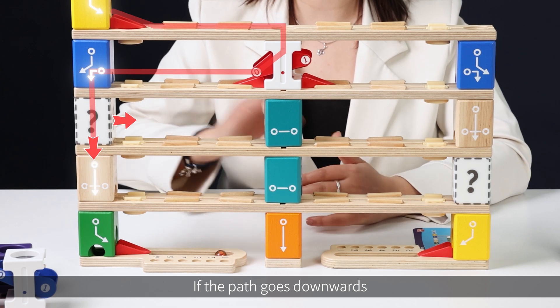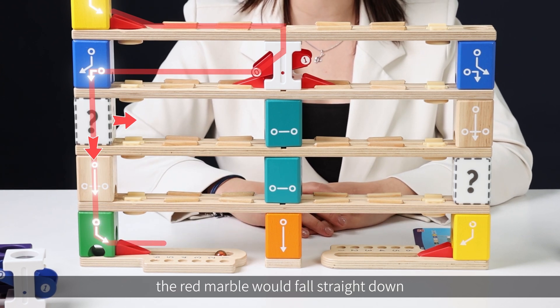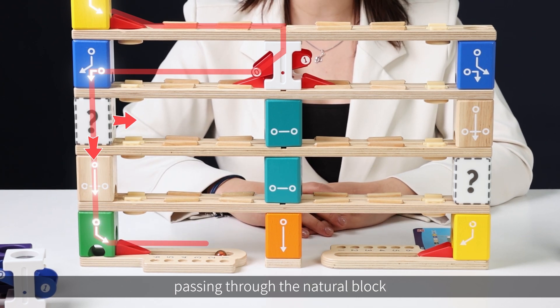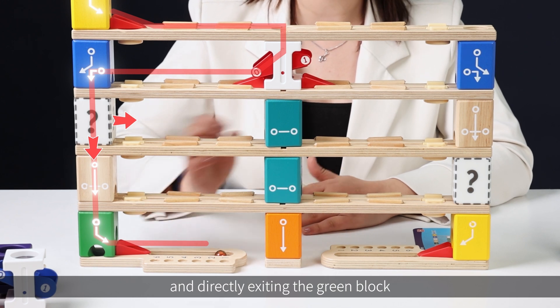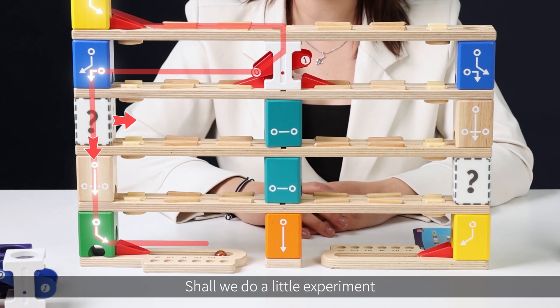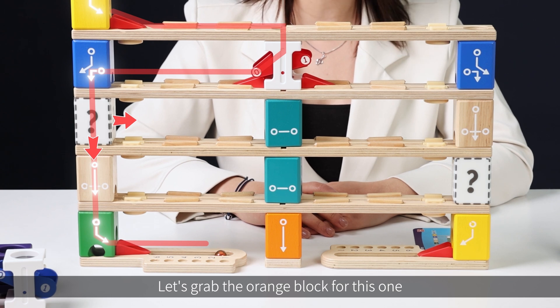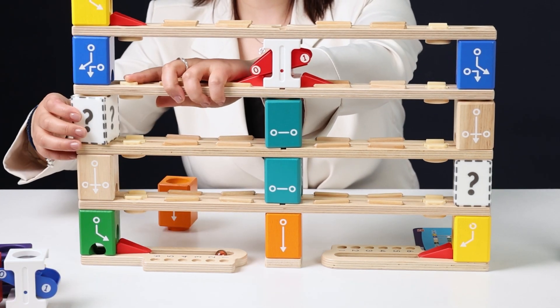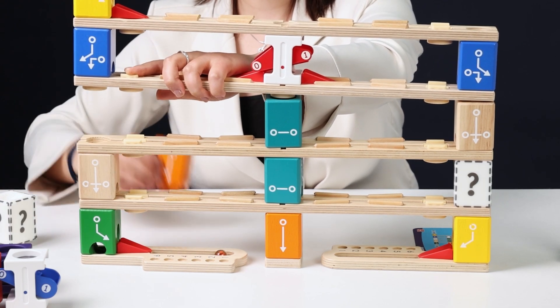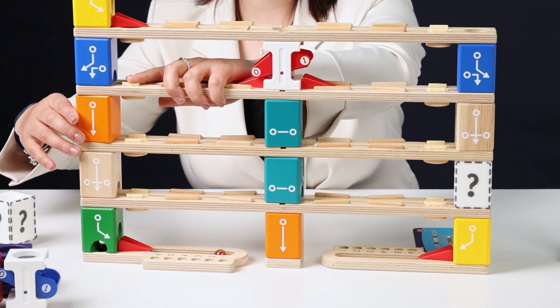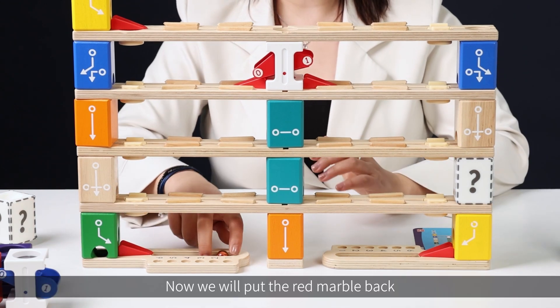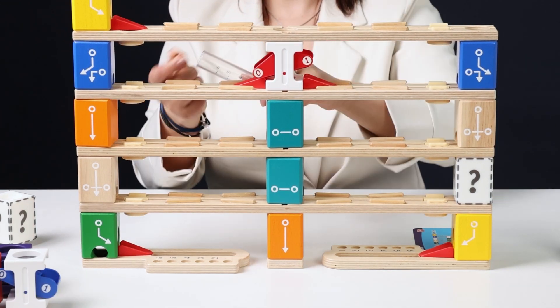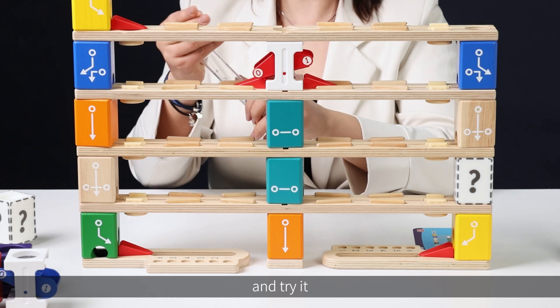If the path goes downwards, the red marble would fall straight down, passing through the natural block and directly exiting the green block. Shall we do a little experiment? Let's grab the orange block for this one. Here it is. Now, we will put the red marble back and try it.